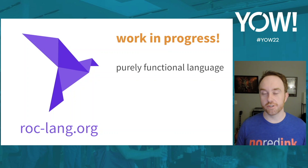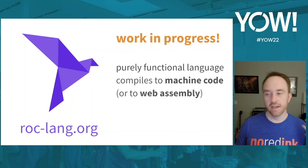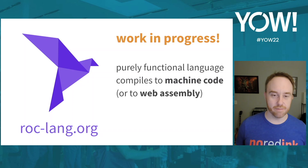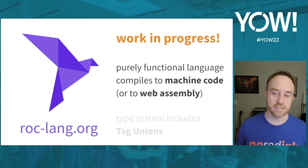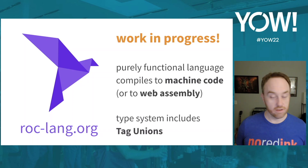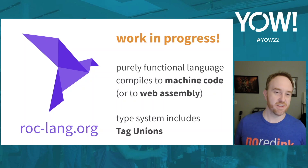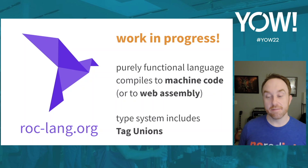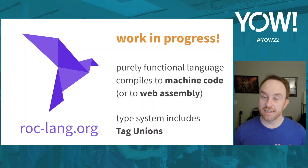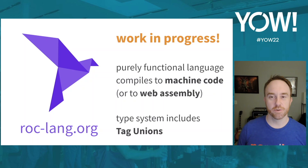Tag unions are a feature of the ROC programming language — anonymous sum types that allow accumulating and exhaustive pattern matching. ROC is a work in progress; you can try it at rocklang.org today, though I don't recommend it for production. The techniques I'll describe can also be applied in OCaml with polymorphic variants, or TypeScript and Sorbet for Ruby with union types.